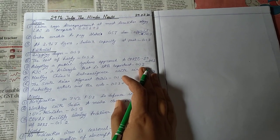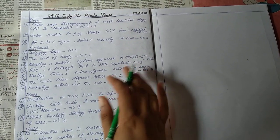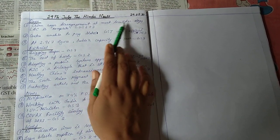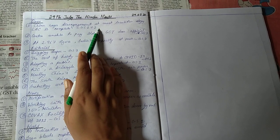Good morning to all of you. So today is 29th July, Hindu news analysis, page number 1, open page. China says disengagement at most localities along LAC is complete, GS paper 2 and 3.